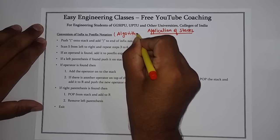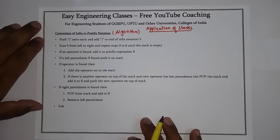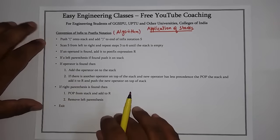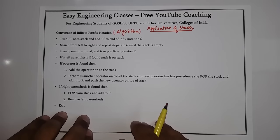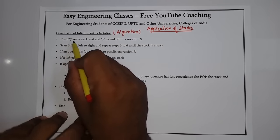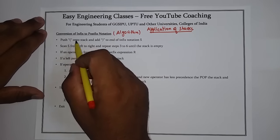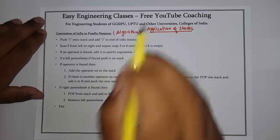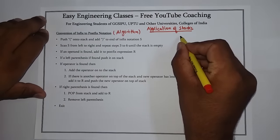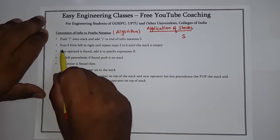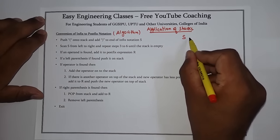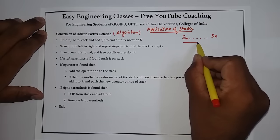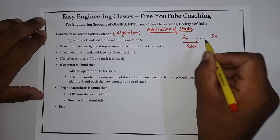This is the algorithm. We will go through examples to solve it so that it becomes clear how we can convert infix to postfix. But for theory purposes you can write the steps of this algorithm. The first step says: if there is a left parenthesis, push the left bracket onto the stack and add a right bracket to the end of the infix notation. Suppose you have an infix notation S, and you have to scan it from left to right — from S[0] to S[n].